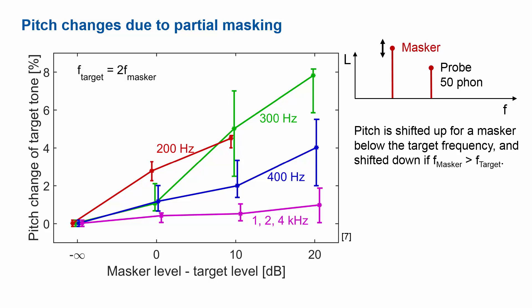That pitch shift is particularly pronounced for low-frequency tones. The relationship here is that the masker is one octave below the target. Looking at the red curve for 200 Hz, the masker is at 100 Hz. If both have the same level, or the masker has 10 dB more than the target, we see quite pronounced shifts of up to 4%. For the 300 Hz curve it's even more pronounced — up to 8%. This is really massive. The same occurs in reverse: if the probe is below the masker in frequency, the probe shifts downward in pitch. The frequency is always the same, but the perceived pitch changes — psychoacoustics as the translation from physics to perception.